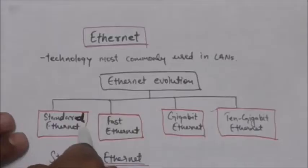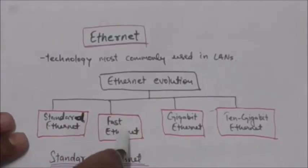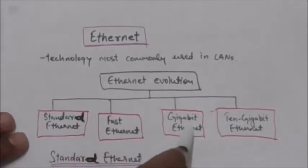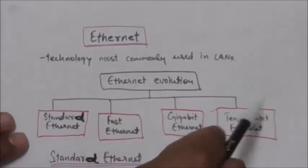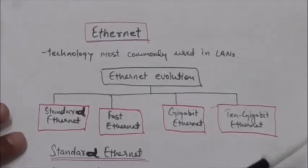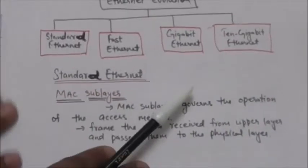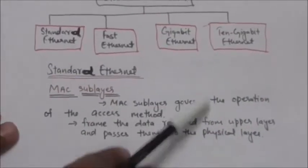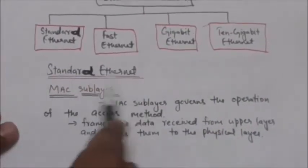Since its creation in 1976, Ethernet has gone through four generations: Standard Ethernet, Fast Ethernet, Gigabit Ethernet, and 10 Gigabit Ethernet.